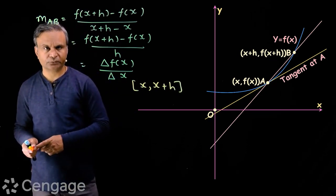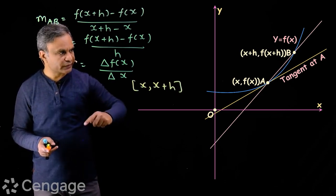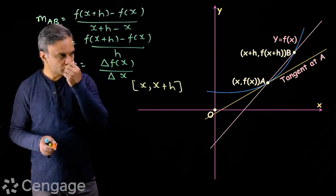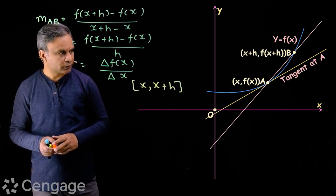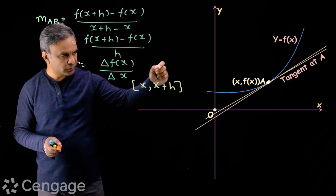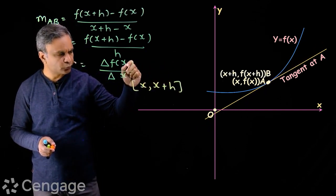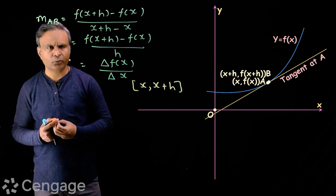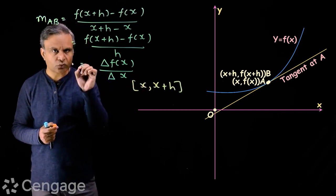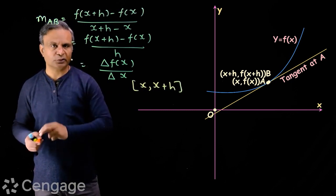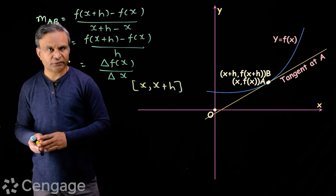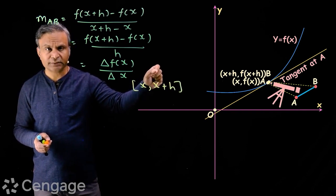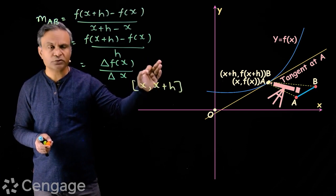Now let's find the slope of the tangent. We have secant line AB and the tangent to the curve at point A. To get the slope of the tangent, we shift point B along the curve towards A and bring it so close to A that it becomes difficult to distinguish. Point B and point A are so close that even under a microscope we can just barely see them as two different points, but on this scale they seem almost coincident — not exactly coincident, but almost.